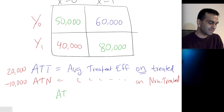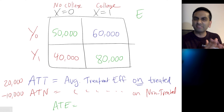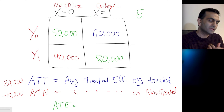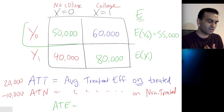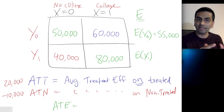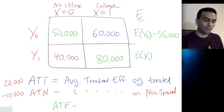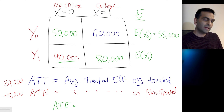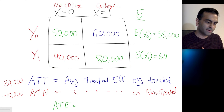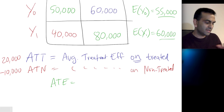The actual ATE is simply the average of the ATT and the ATN. Assuming equal group sizes, the expected Y0 for everybody is the average of $50,000 and $60,000 — that's $55,000. The expected Y1 — if you forced everybody to go to college — would be $80,000 for the college group and $40,000 for the non-college group, averaging to $60,000. So the actual ATE, the average treatment effect, is $60,000 minus $55,000 equals $5,000.